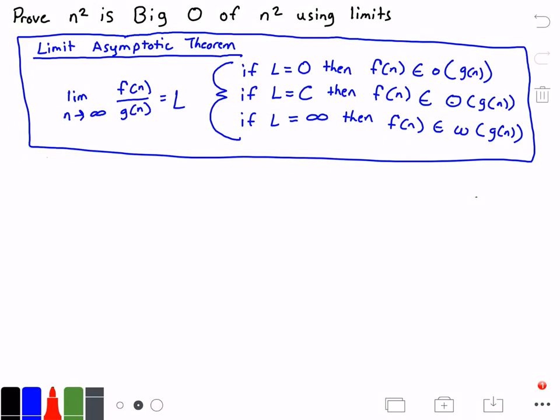If our limit L equals C, where C is some constant value, then F(N) is big theta of G(N). And if L equals infinity, then F(N) is little omega of G(N).